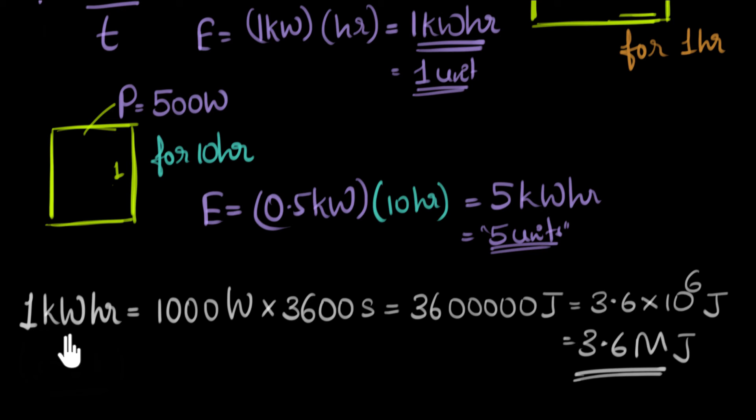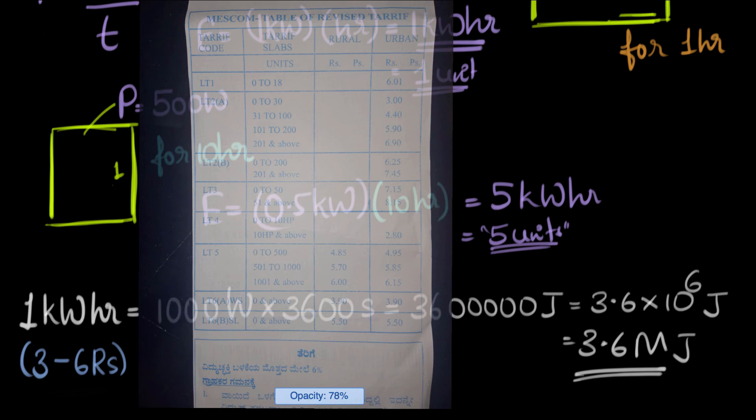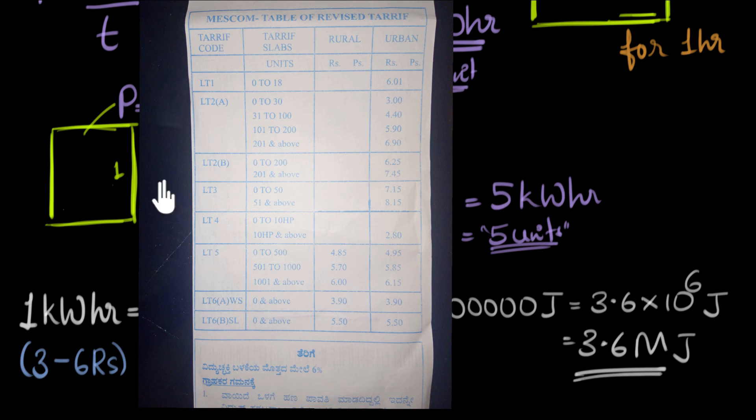And roughly for every kilowatt hour that we consume, every unit of energy we consume, our electric company charges us somewhere around three to six rupees. Of course, this varies from place to place, and it also varies based on how much electricity you are consuming, but roughly it's around this number. I mean, we can go back and look at that receipt. If you look at this receipt, we can actually see the price listed over here.